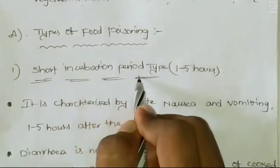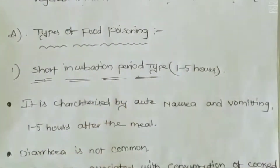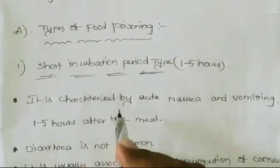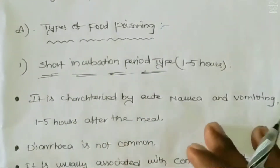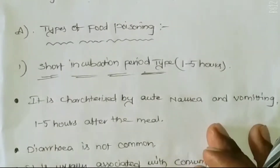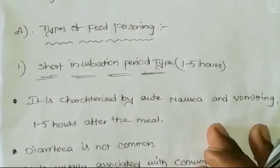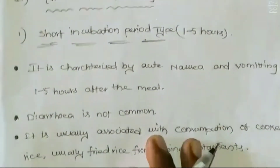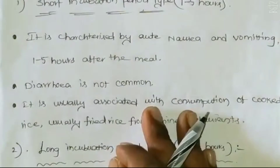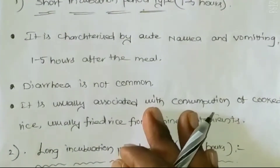The first type is the short incubation period type — one to five hours. It is characterized by acute nausea and sudden vomiting, which continues one to five hours after the meal. Diarrhea is not common — it may occur once but will not continue.